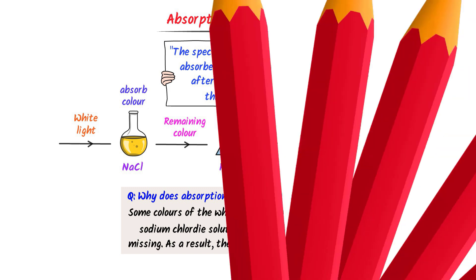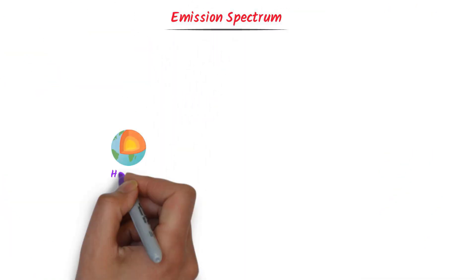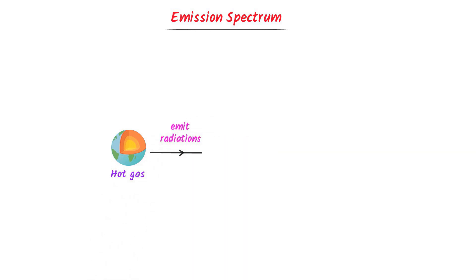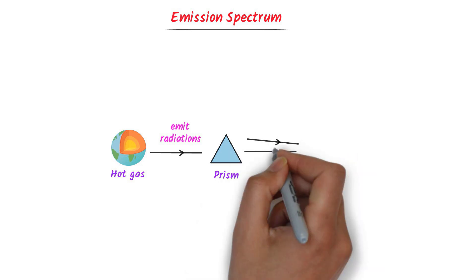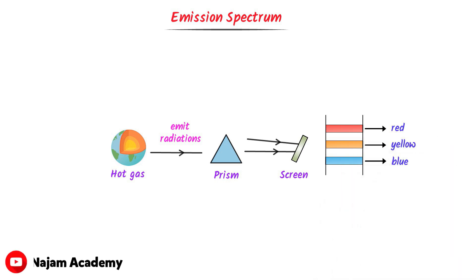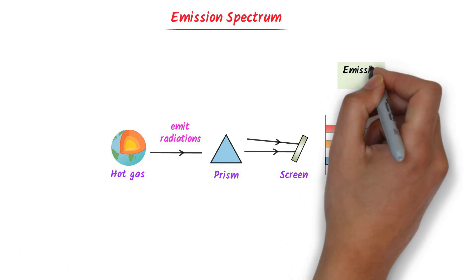Now we will learn about emission spectrum. Consider a hot gas that radiates absorbed wavelengths or absorbed radiation. Passing this radiated light through a prism and tracing the radiations on a screen, we can see colors such as red, yellow, blue, and violet. This spectrum of colored lines is called emission spectrum.